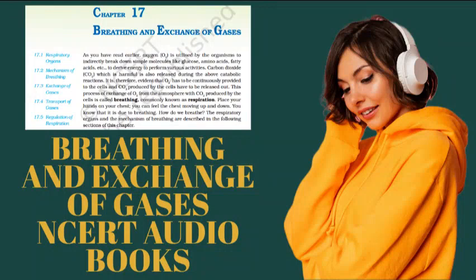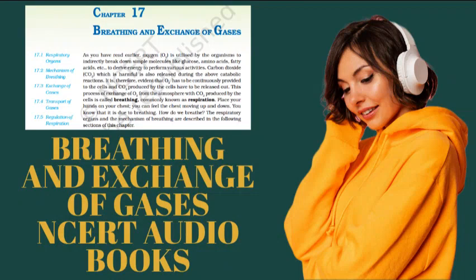Topic 17.2 Mechanism of Breathing. Breathing involves two stages: inspiration, during which atmospheric air is drawn in, and expiration, by which the alveolar air is released out. The movement of air into and out of the lungs is carried out by creating a pressure gradient between the lungs and the atmosphere. Inspiration can occur if the intrapulmonary pressure is less than the atmospheric pressure, i.e. there is a negative pressure in the lungs with respect to atmospheric pressure. Similarly, expiration takes place when the intrapulmonary pressure is higher than the atmospheric pressure. The diaphragm and a specialized set of muscles, external and internal intercostals between the ribs, help in generation of such gradients.